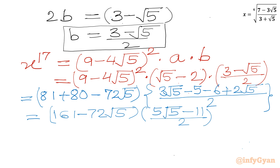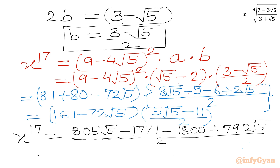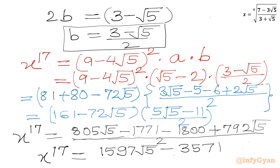Now performing the final multiplication: (161 − 72√5) times (5√5 − 11)/2. Expanding: 161 times 5√5 = 805√5, then minus 1771, minus 1800, plus 792√5, all over 2. Combining terms: x power 17 equals (1597√5 − 3571) over 2. This is the final answer.